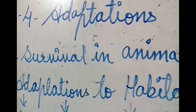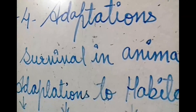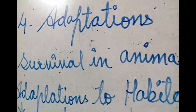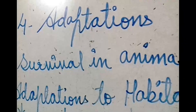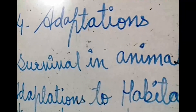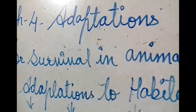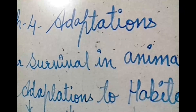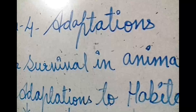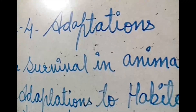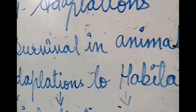The animals that adapt to their habitat or environment survive; the ones that are not able to adapt die and slowly become extinct. Adapting to a particular environment is not a one or two day process — it takes hundreds and thousands of years to happen. Now we will see adaptations to habitat.